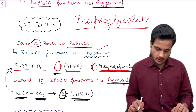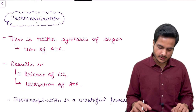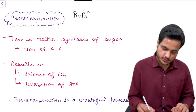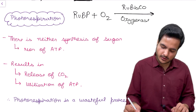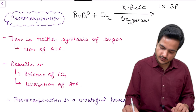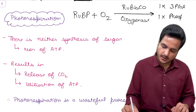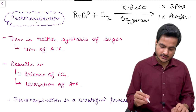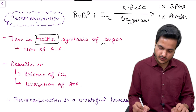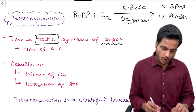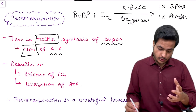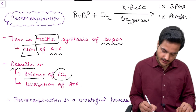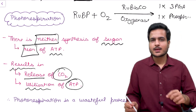In photorespiration, RuBP (ribulose bisphosphate) is forced to combine with oxygen because RuBisCO is behaving like an oxygenase, leading to the formation of one molecule each of 3-phosphoglyceric acid and phosphoglycolate. In this process, neither the synthesis of sugar (glucose) nor the synthesis of ATP (the energy currency) is occurring. Additionally, it results in the release of carbon dioxide with utilization of energy.